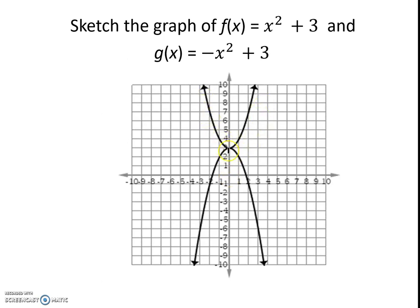It's x squared moved up to 3 on the y-axis, whereas this one is also moved up 3, but this negative in front of the x squared flips it upside down. And so this is our g(x), and this is our f(x).